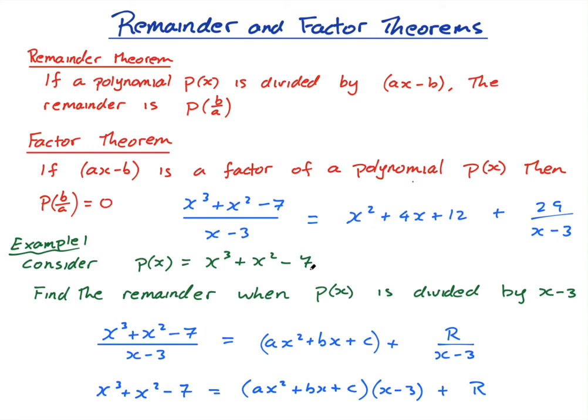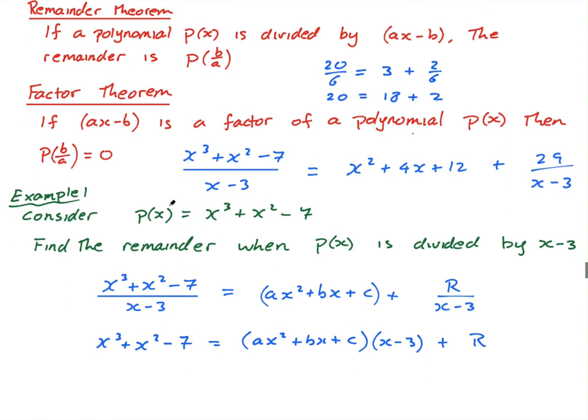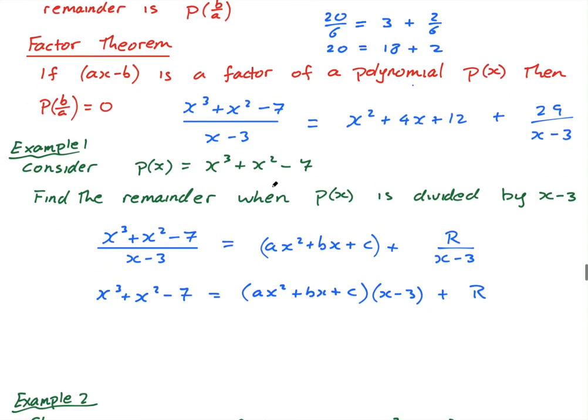This is just what division is. Let's say I said 20 divided by 6 equals 3 plus 2 over 6, 3 with my remainder 2 over 6. That's like saying 20 is equal to 18 plus 2, 18 with a remainder of 2, or 3 plus 2 over 6. Same kind of thing here. Now look what happens. If I actually, so here's p(x), p(x) is equal to x cubed plus x squared minus 7.